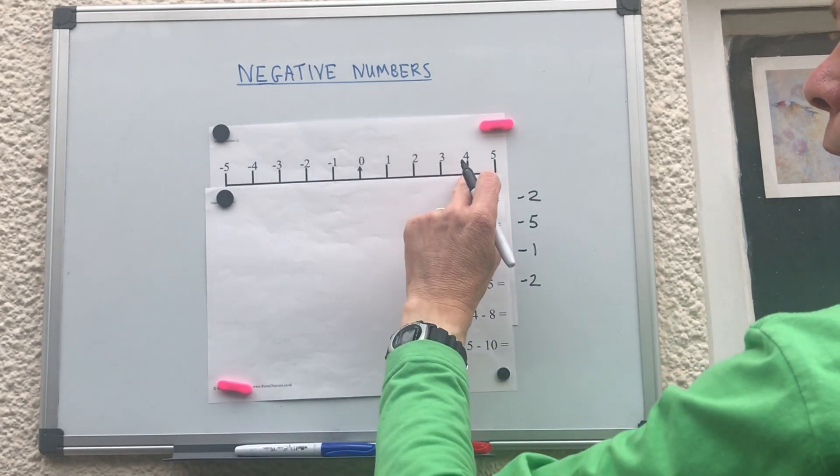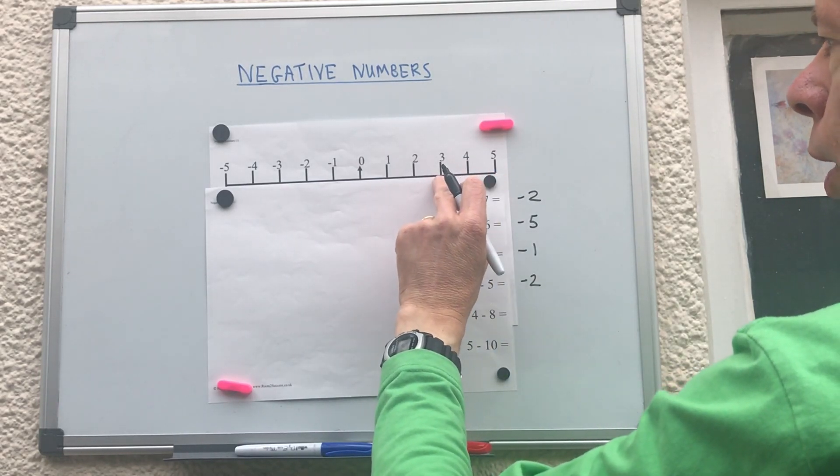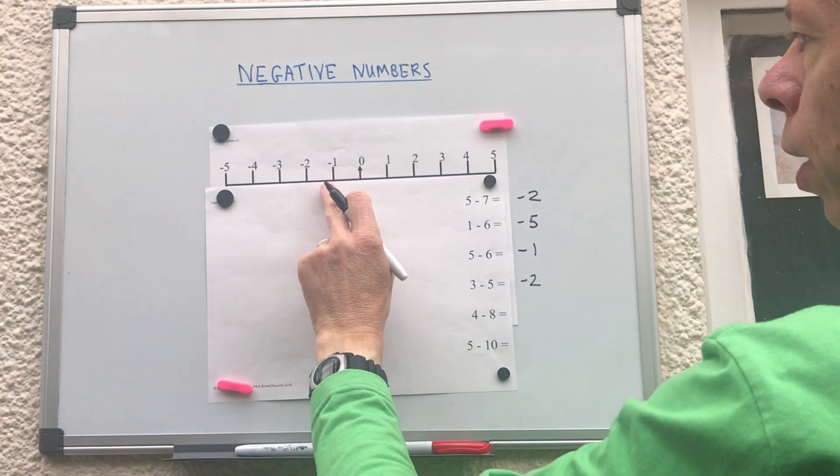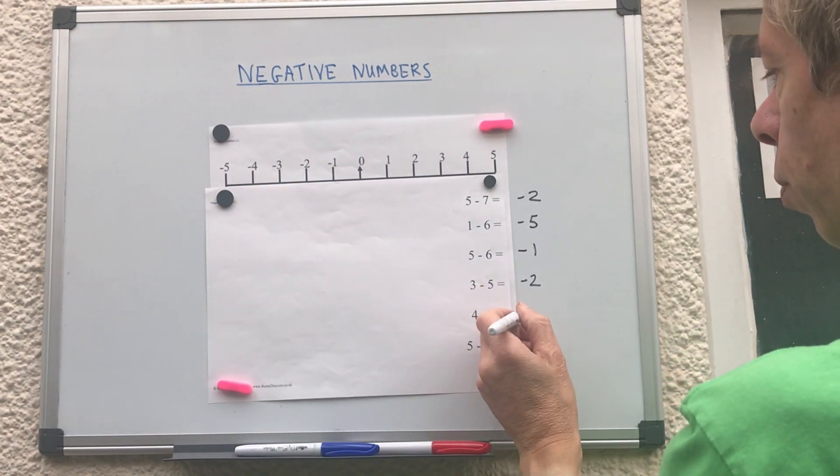Four take away eight. So start on four, go back eight steps. One, two, three, four, five, six, seven, eight will give us minus four.